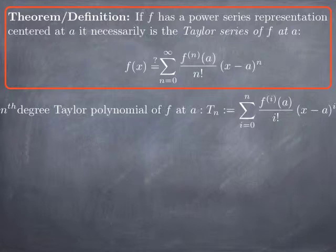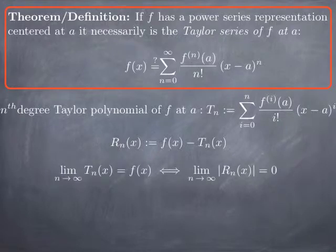The nth degree Taylor polynomial of f at a is the partial sum of the power series up to n. We want to know whether the sequence of Taylor polynomials converges to the function f for each x. So we define r_n of x to be the error that we make if we approximate f of x by T_n of x. Saying that the sequence of Taylor polynomials converges to f is the same as saying that the nth remainder r_n goes to 0 as n goes to infinity.